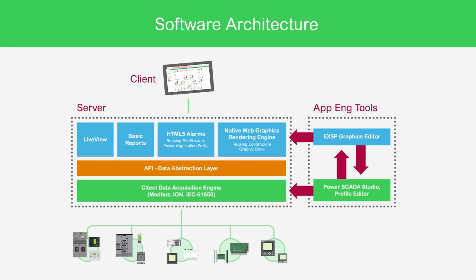In addition to the Graphics Engine, other applications may connect to the CT API layer to access data. Basic reports and Live View connect in the same manner, and the Alarm Rendering Engine displays alarms in a fashion consistent with the rest of EcoStruxure Power. This component also enables alarms to be grouped into incidents and analyzed in a similar manner.